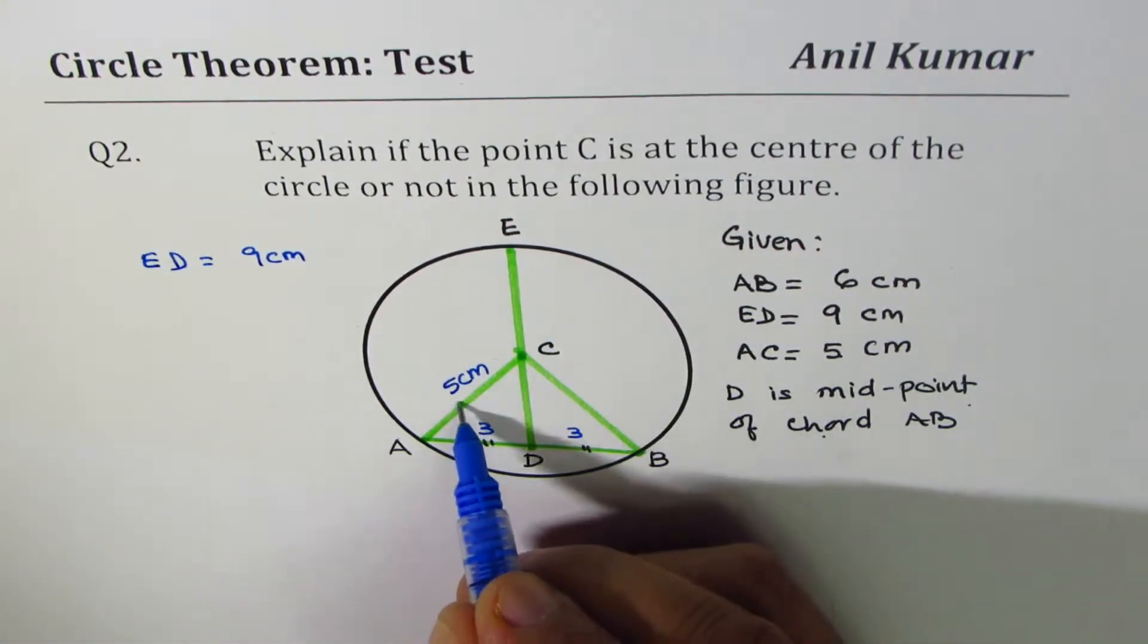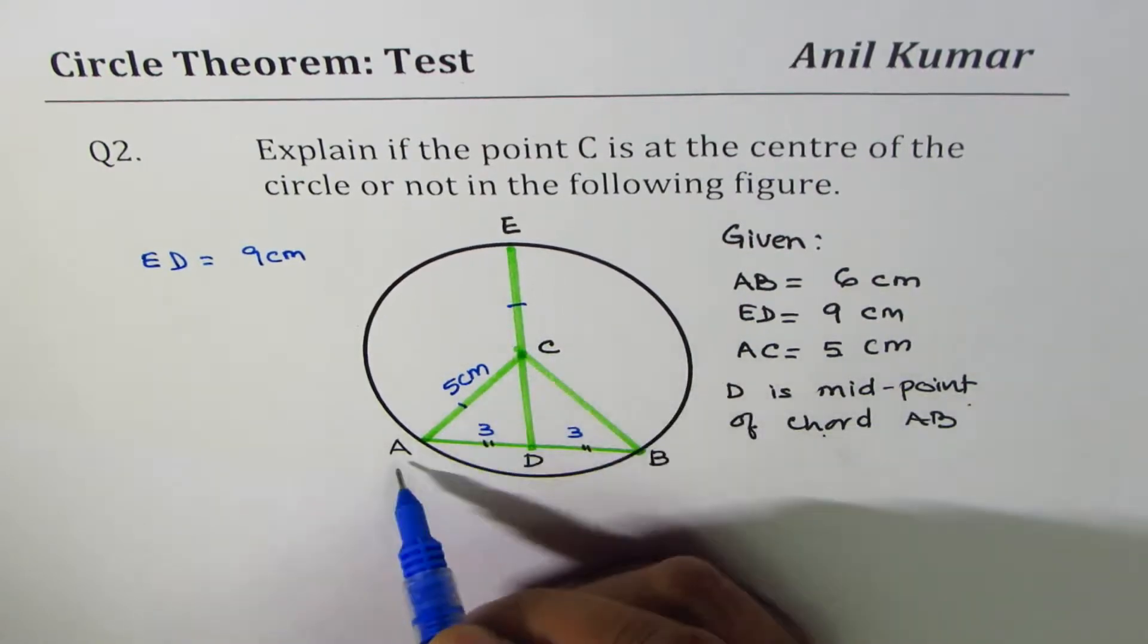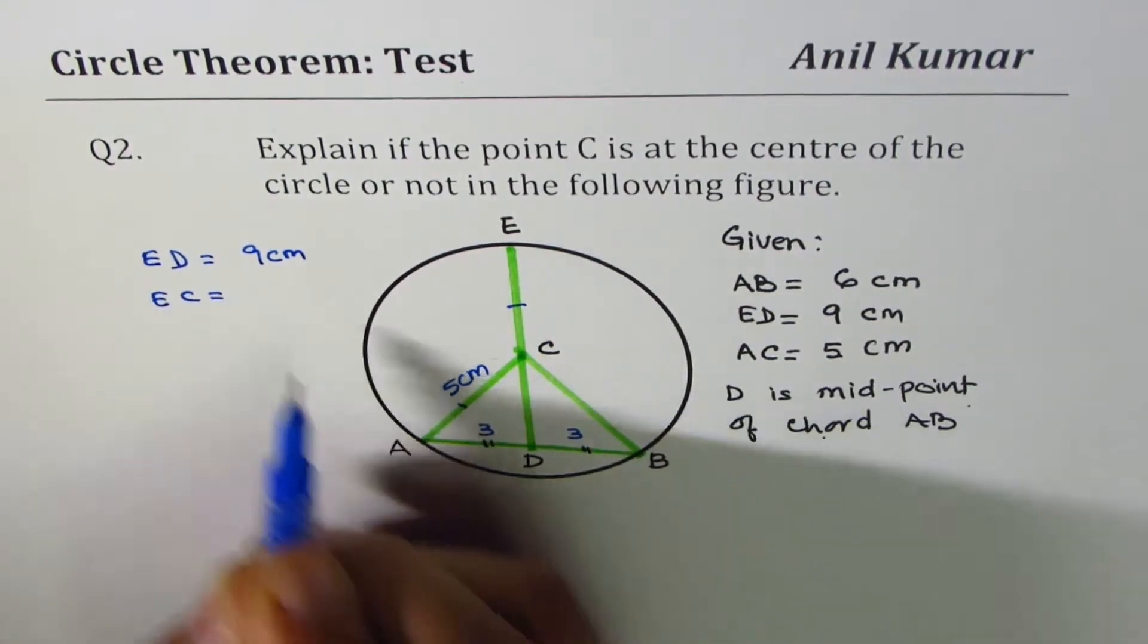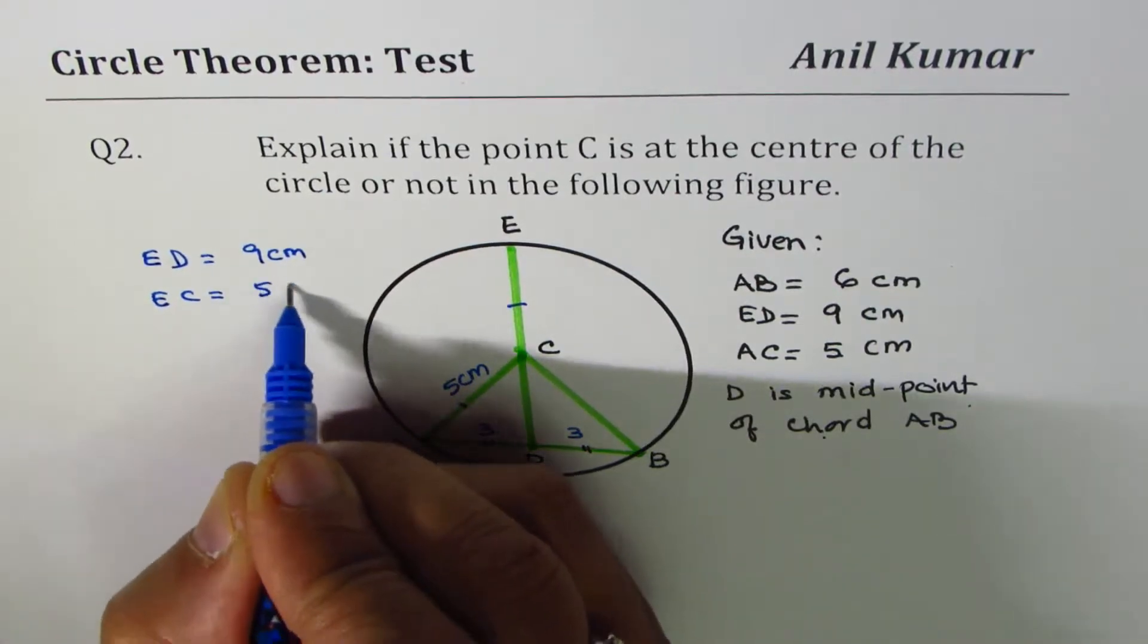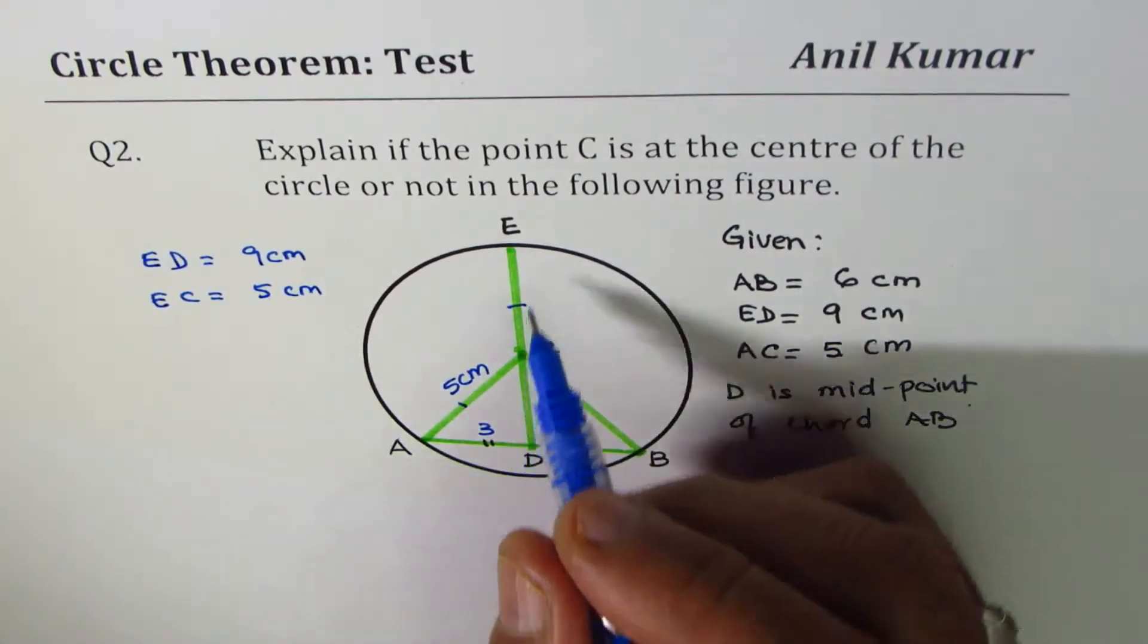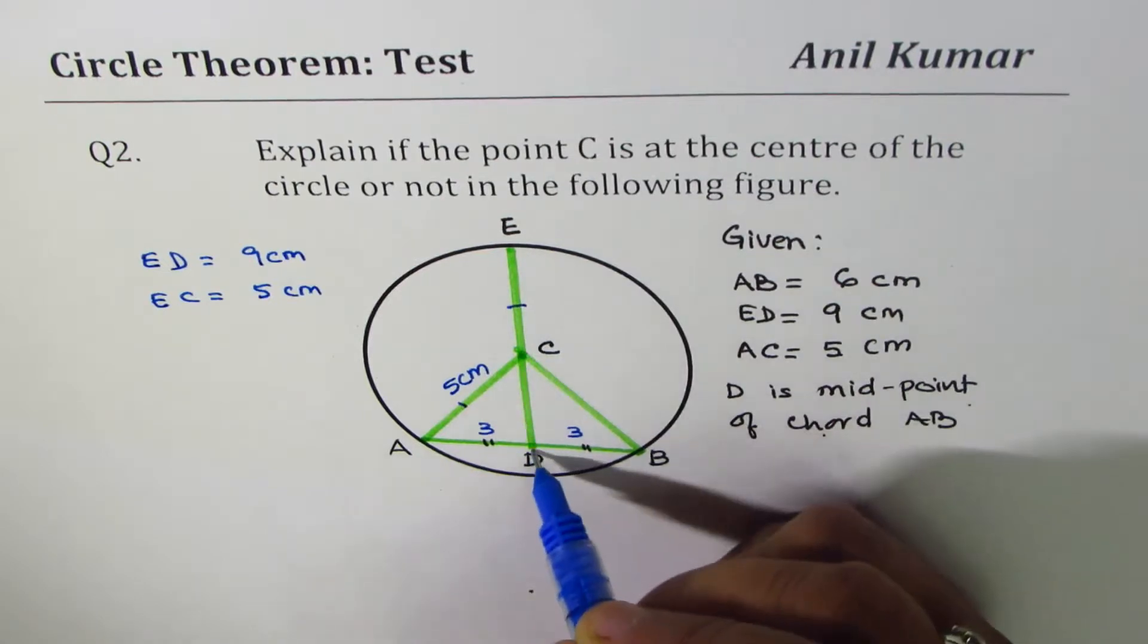So AC is the radius. AC is also equal to 5 centimeters. Right? Now we can write down what CD is.